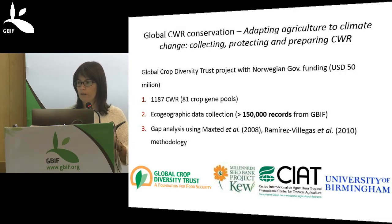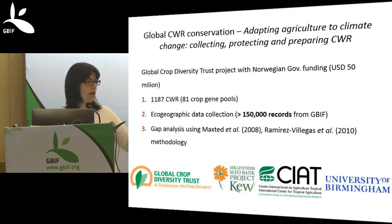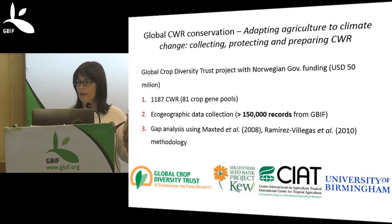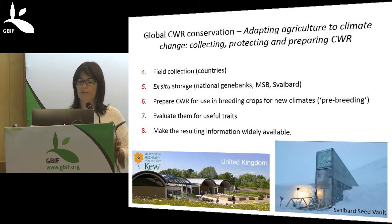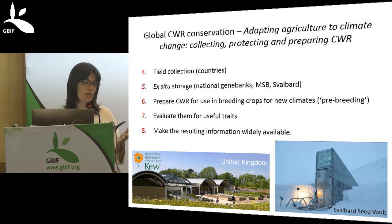81 crop gene pools were selected and more than 150,000 records from GBIF were used in this analysis. Gaps for ex situ conservation were identified and sent to individual countries, which began field collections. Seeds will be conserved at national gene banks, the Millennium Seed Bank, and the Svalbard Seed Vault in Norway. These seeds will then be evaluated for useful traits related to climate change and prepared for use in breeding crops for new climates.